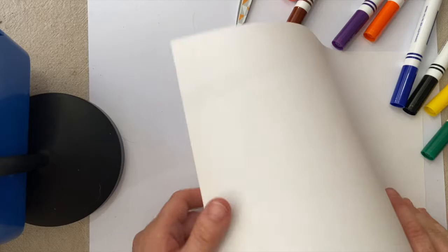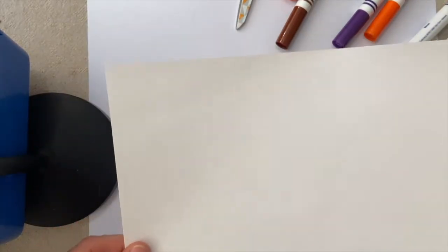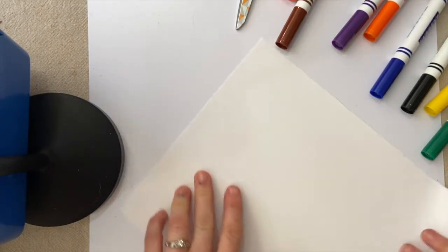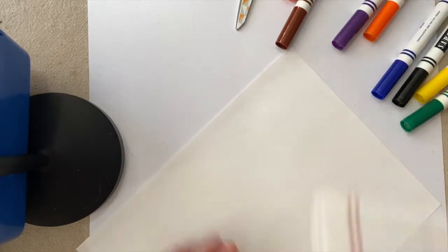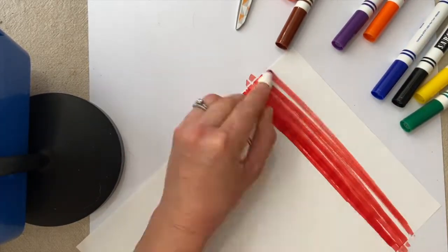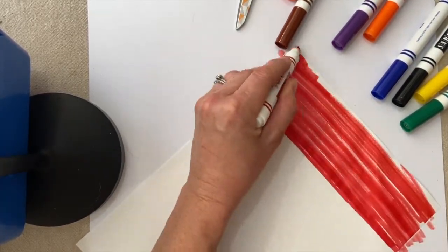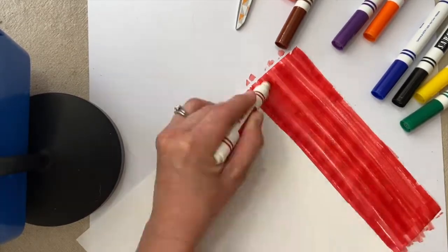We're going to start by making the band part of the project. Turn your paper on its side and then we're going to color line by line by line, so that we make a nice big space that's all one color.